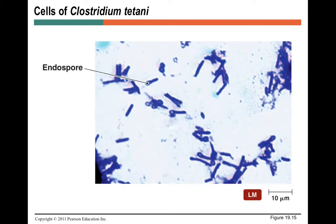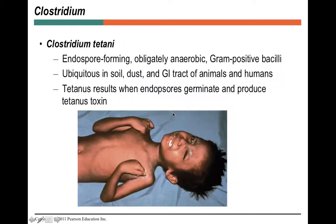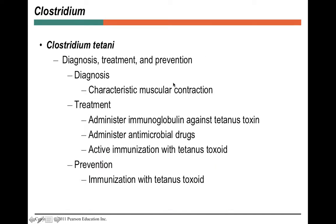Clostridium tetani is the cousin to botulinum. It has a unique gram stain appearance — a lollipop shape with an endospore forming on the end of the rod. Although tetanus is rarely seen in developed countries, it remains common in developing countries, where it causes dramatic muscular contractions. Soil and dust are sources of infection. The US has a vaccine for it. Treatment includes immunoglobulins, antimicrobials, and immunizations.